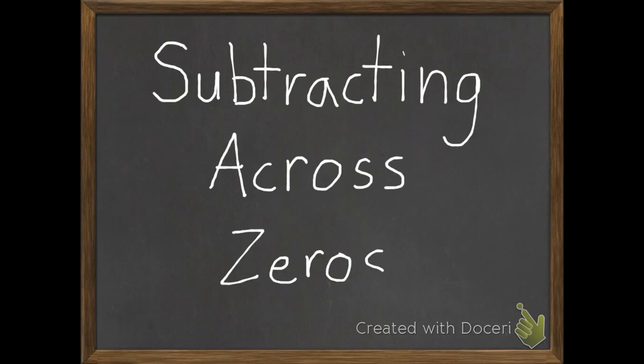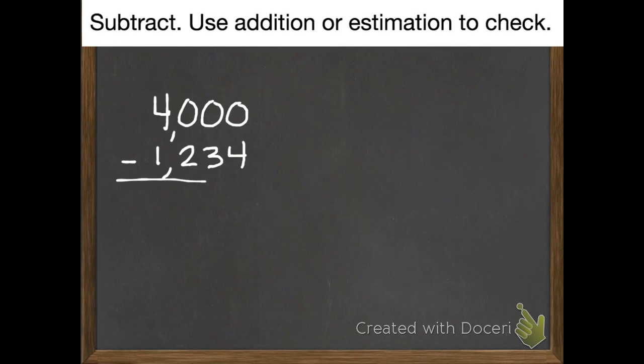Today, we will be subtracting across zeros. Here's my first example: 4,000 subtract 1,234.